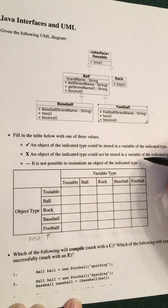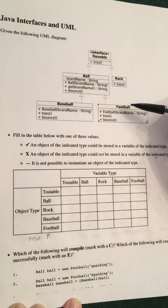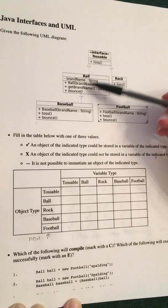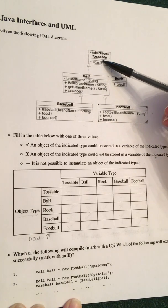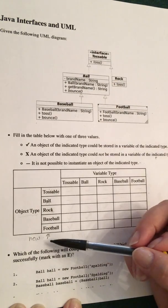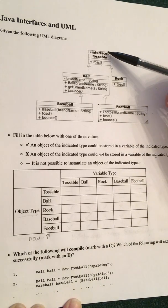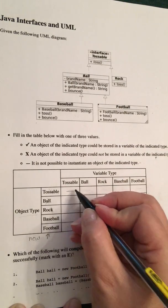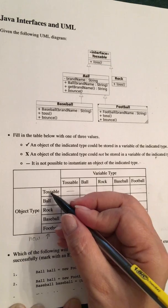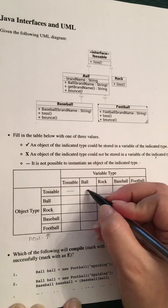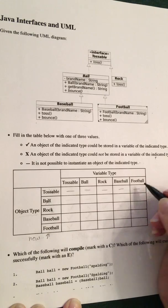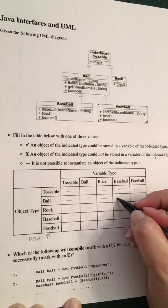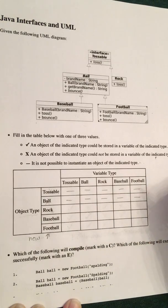So let's think about what we cannot instantiate in this UML. We cannot instantiate things that don't have the actual code inside them. We cannot say 'new tossable' because it's an interface, and we cannot say 'new ball' because it's an abstract class. So since we're creating objects of these types, we cannot instantiate tossable — it doesn't matter what kind of variable we try to put it in. We cannot instantiate ball — it doesn't matter what variable type we want to put it in because it is an abstract class.